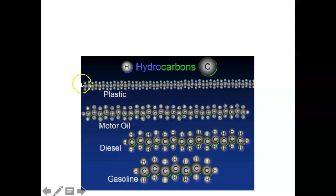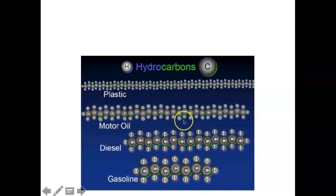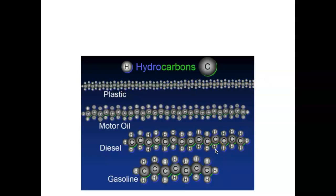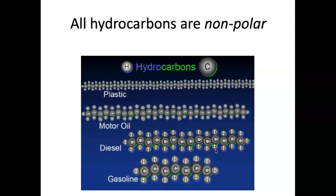Looking at this slide, you can tell something about the physical properties of hydrocarbons. We have gasoline — a liquid that really wants to be a gas — then diesel, which gets more viscous and harder to burn, then motor oil with many carbons connected together, and finally plastic, which is in the solid phase at room temperature and pressure. Plastic is essentially a big giant long polymer chain. One thing you should always know: hydrocarbons are always non-polar. That's why water and oil never mix — water is polar and all hydrocarbons are non-polar.